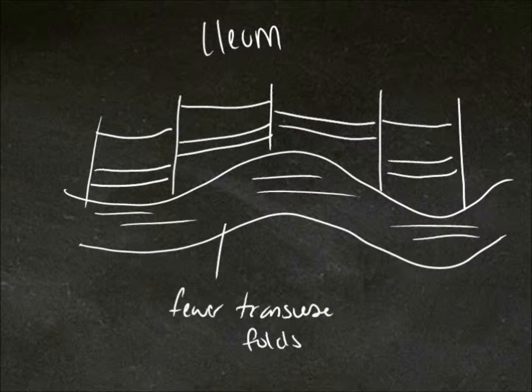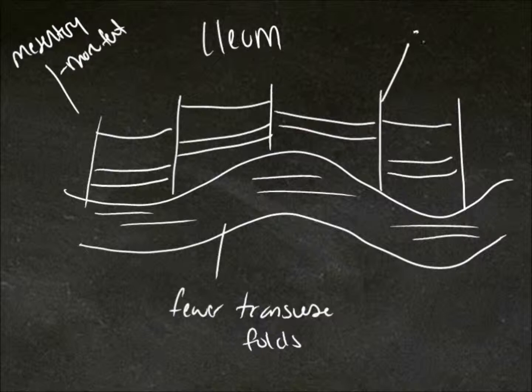The mesentery has more fat. We can see that the vasorecta are shorter and there are more arcades.